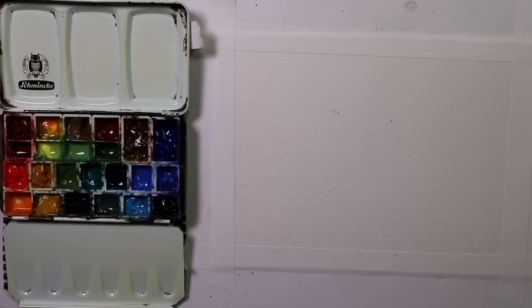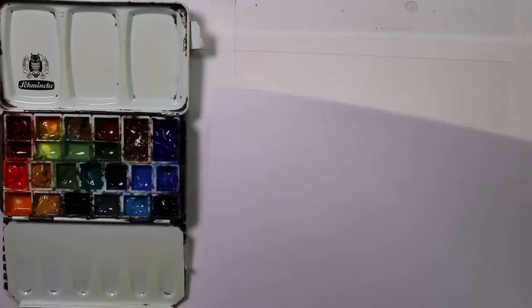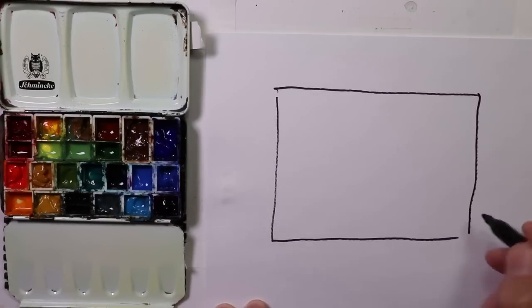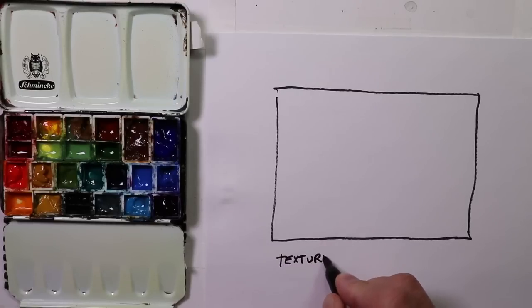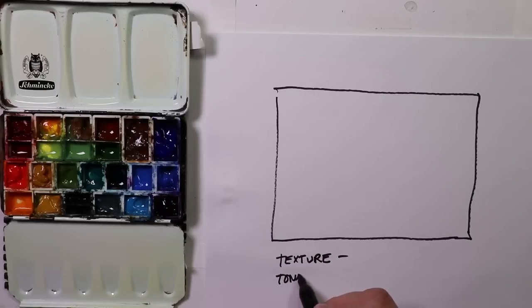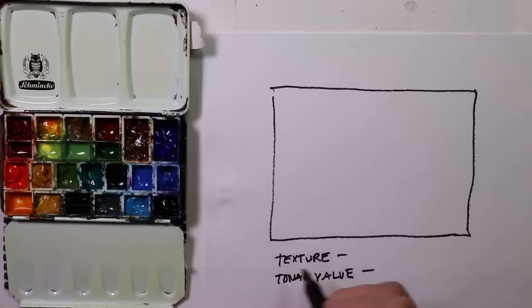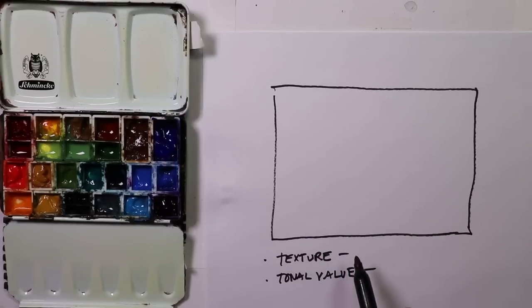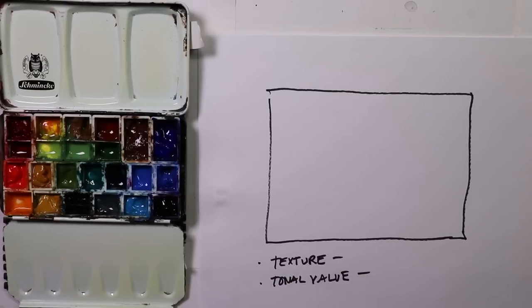We're gonna make some notes first. The basic idea here is we're going to key in on two key aspects of watercolor: one would be texture, and then tonal value. Both are great building blocks of watercolor, and we can make a real exciting painting by just using texture and tonal value as our two main building blocks.